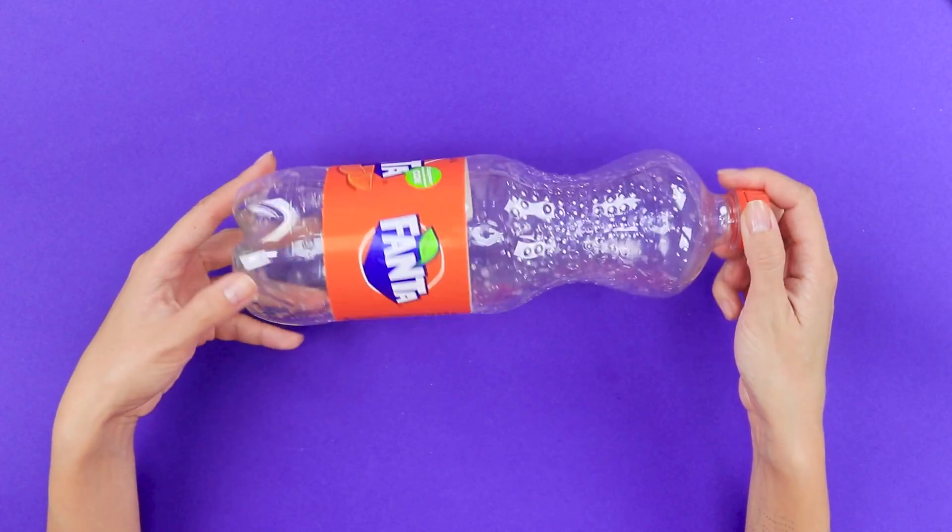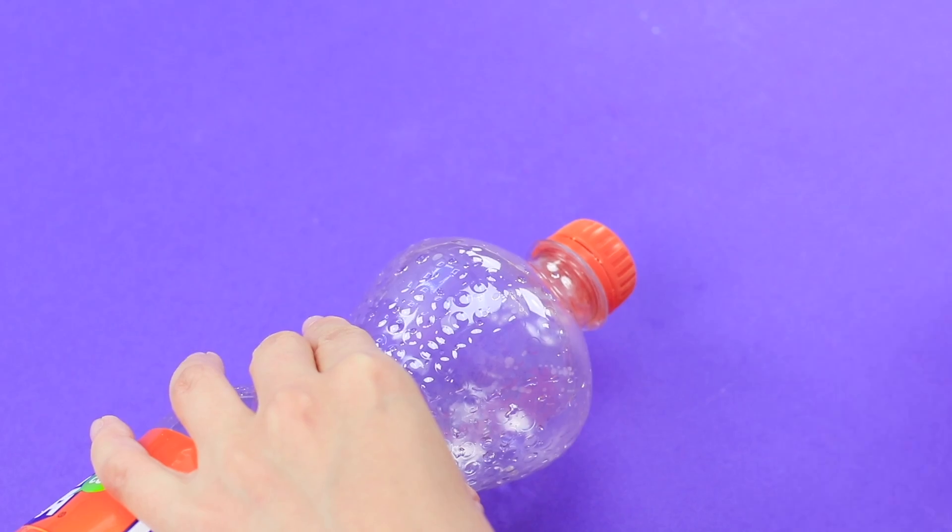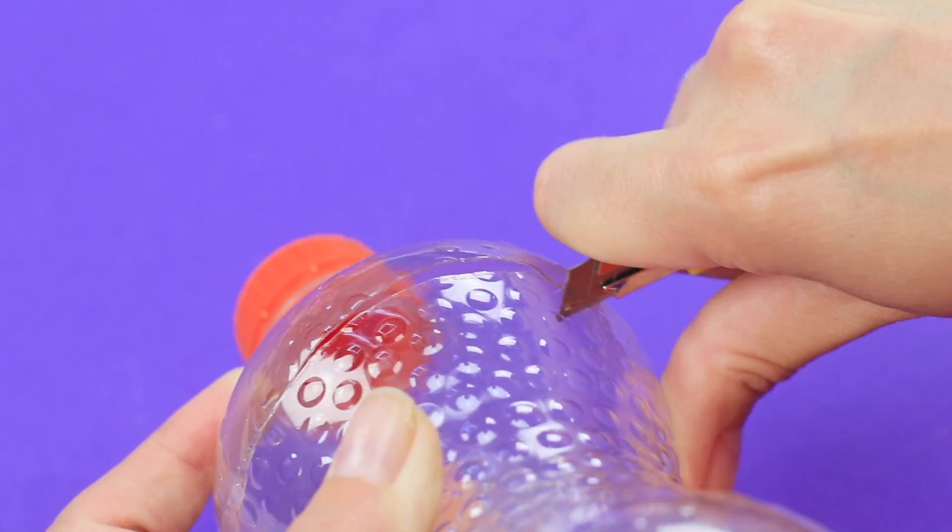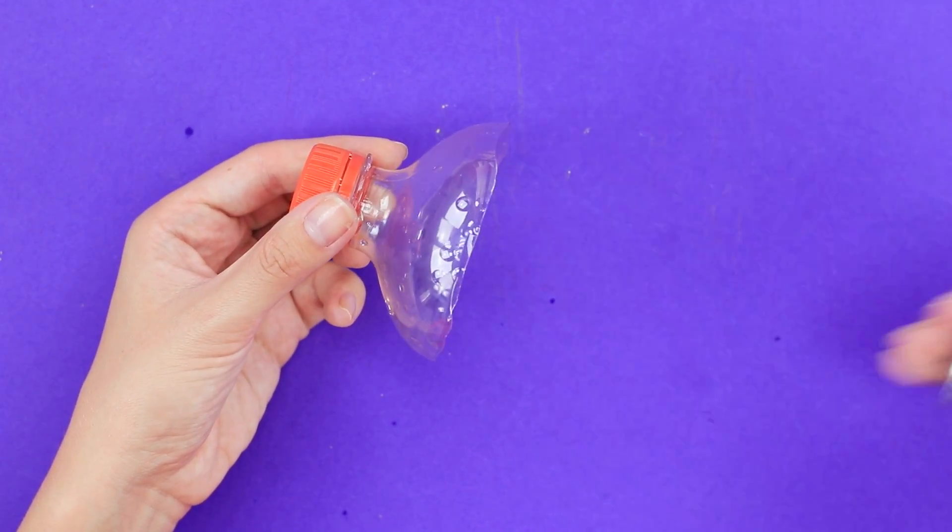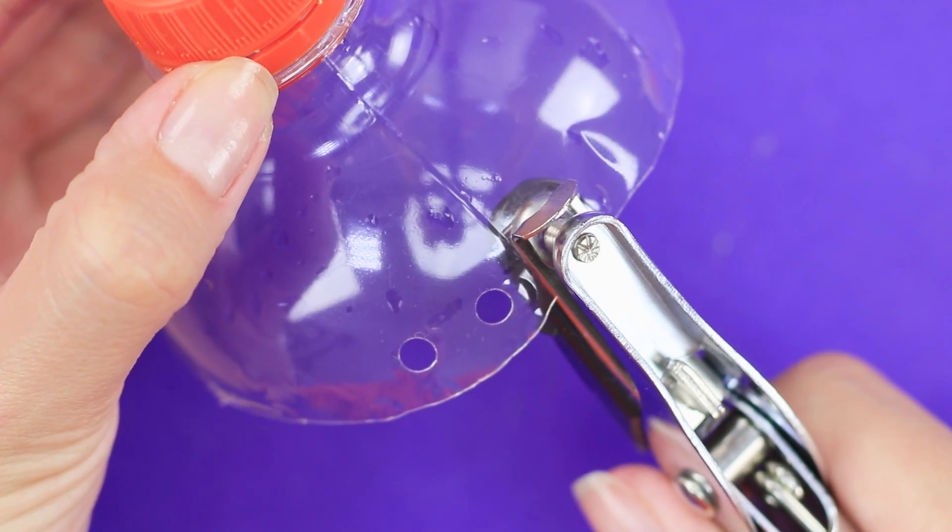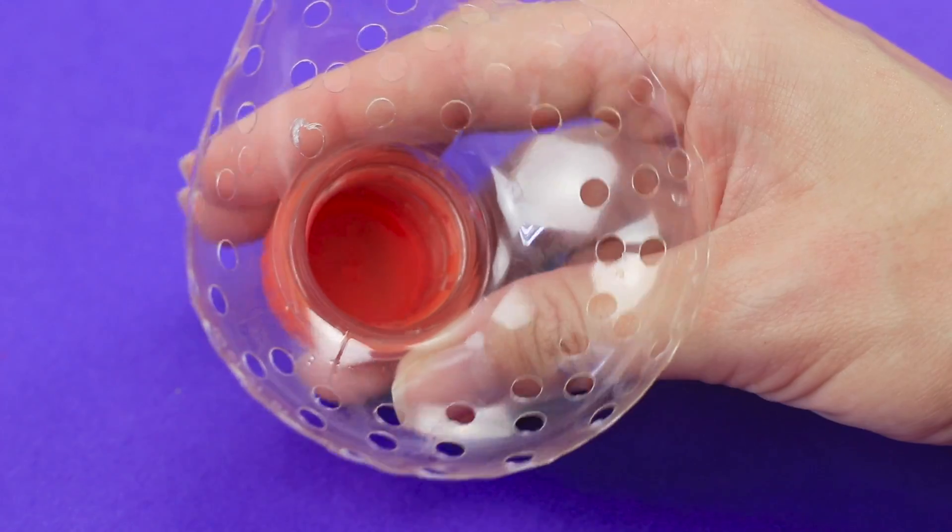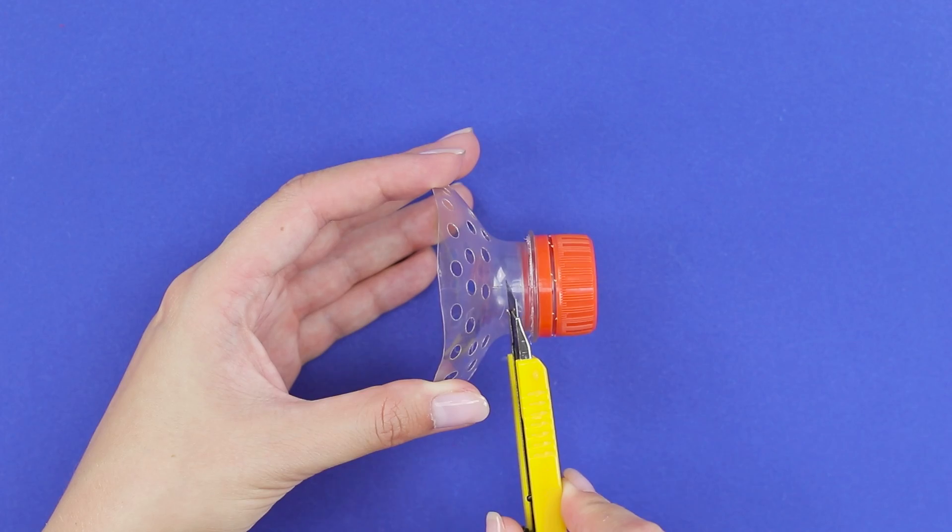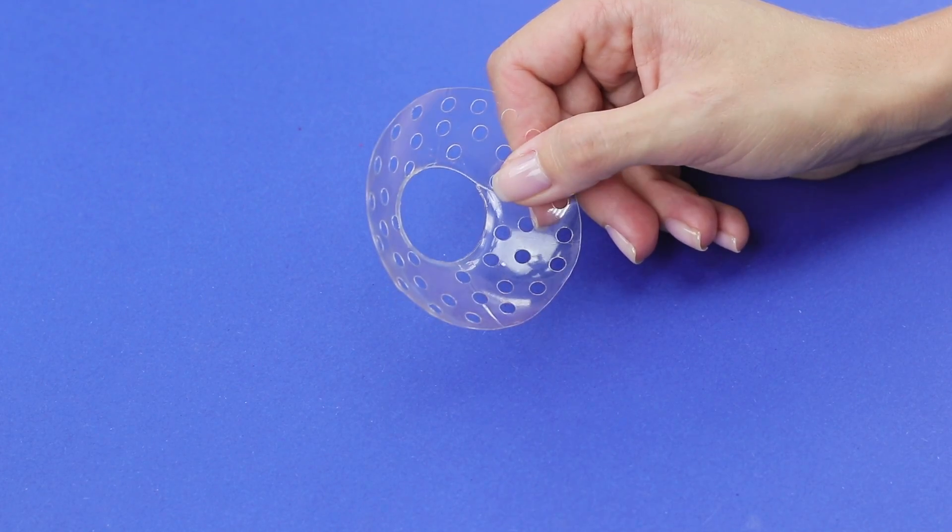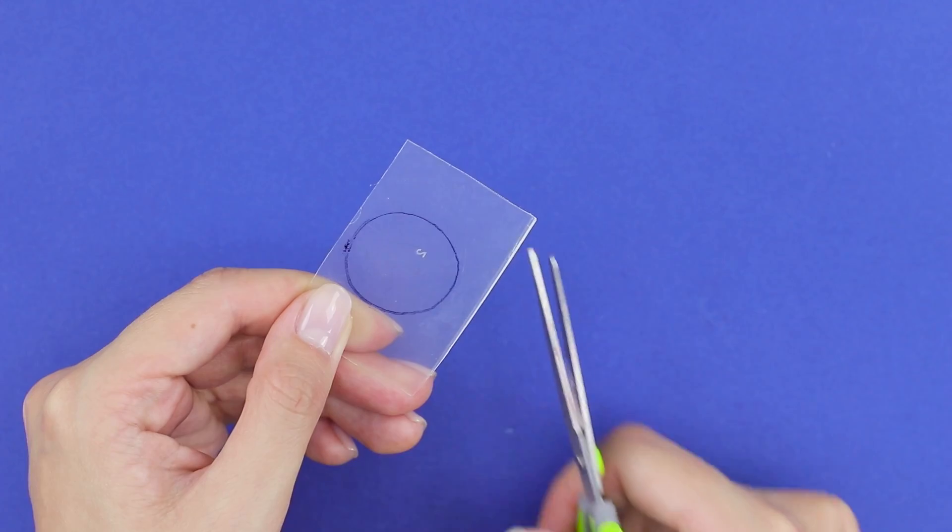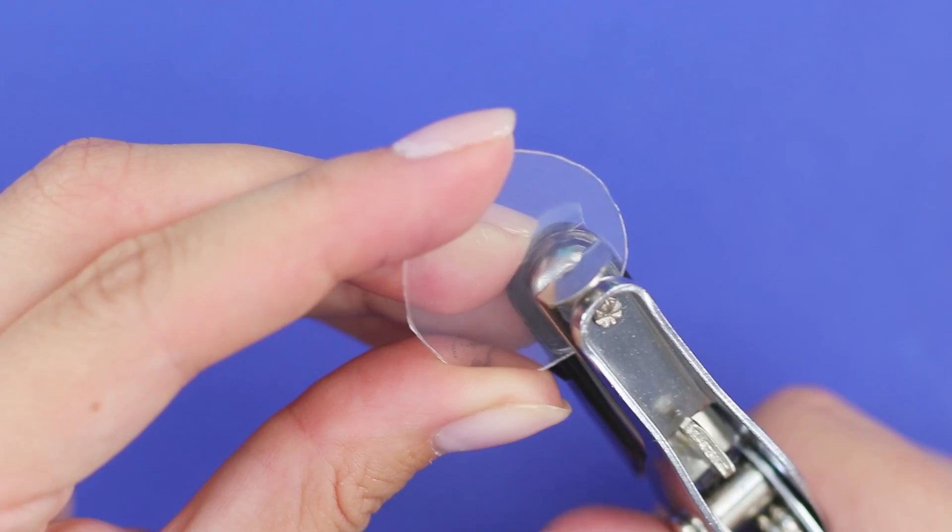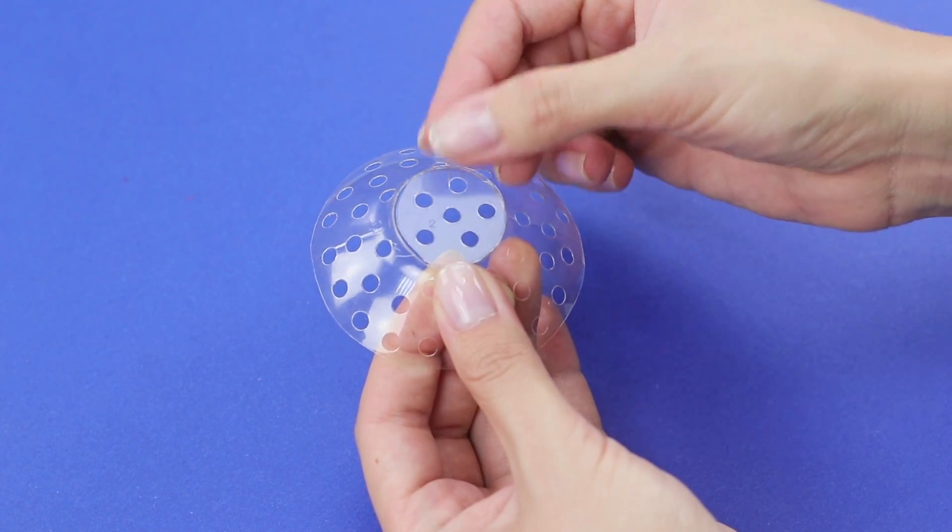Do you think that an empty soda bottle is trash? You are wrong! Cut off the bottleneck with a utility knife. Make holes with a hole punch. Cut off the upper part of the neck. Mark the diameter of the hole on a piece of plastic. Cut it out. Make holes. Glue the pieces together.